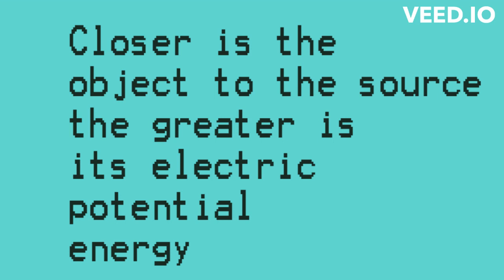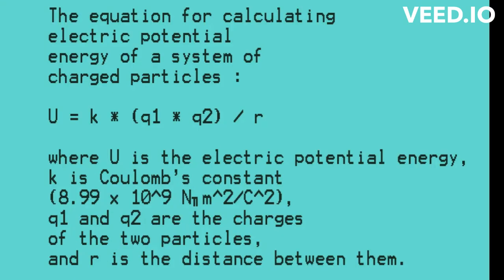The electric potential energy of a system of charged particles can be calculated using the equation: U equals k asterisk q1 asterisk q2 slash r.